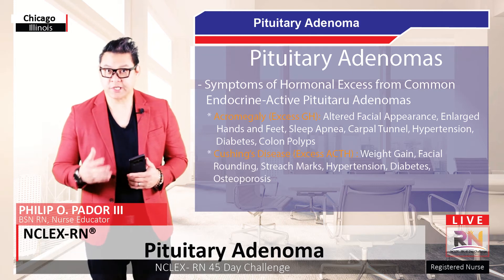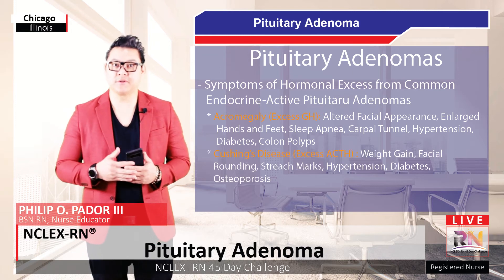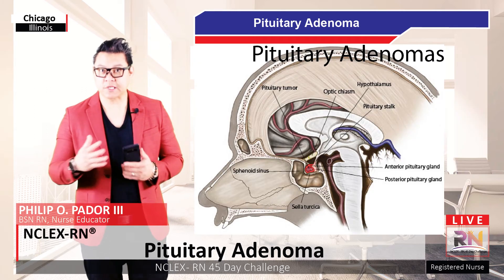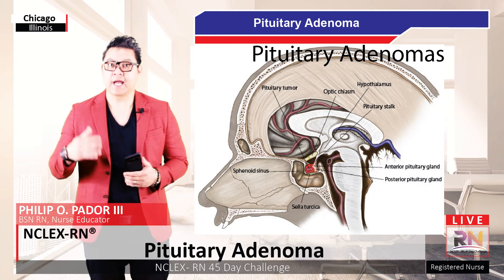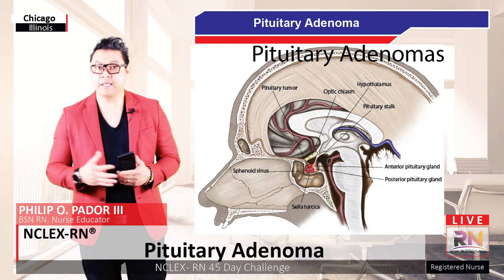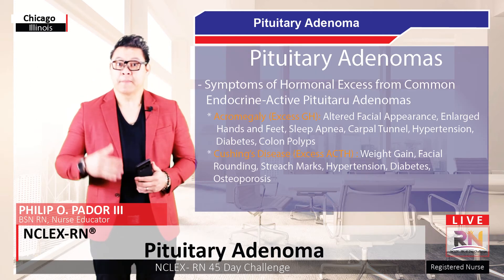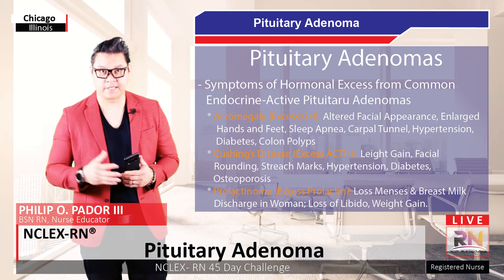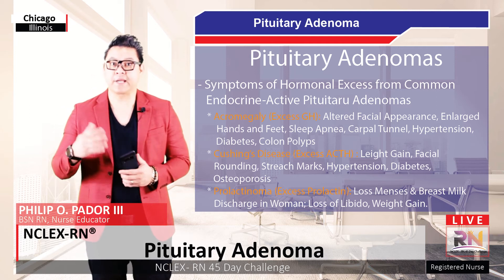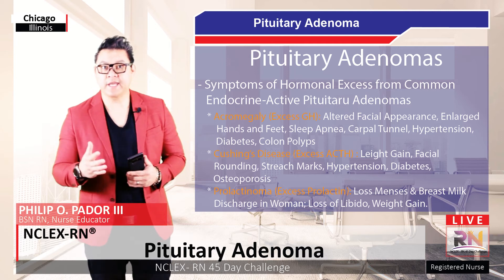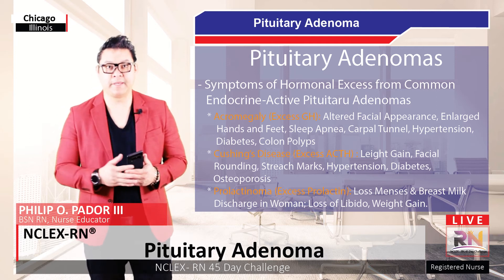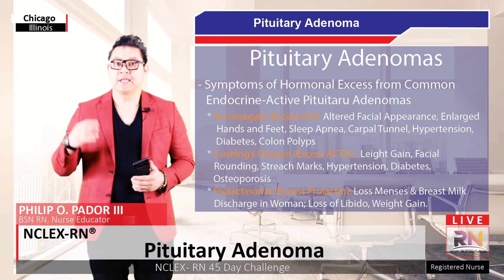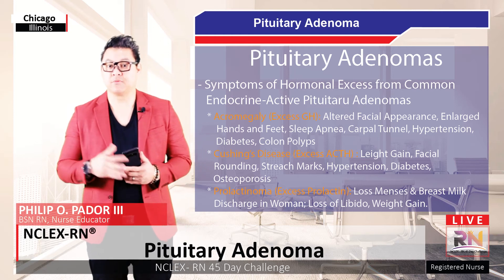For patients with Cushing's disease, symptoms can include weight gain, facial rounding, stretch marks, hypertension, diabetes, and osteoporosis. Prolactinomas in women typically lead to loss of menses, breast milk discharge, weight gain, and loss of libido. In men, they may lead to loss of libido, impotence, and weight gain.